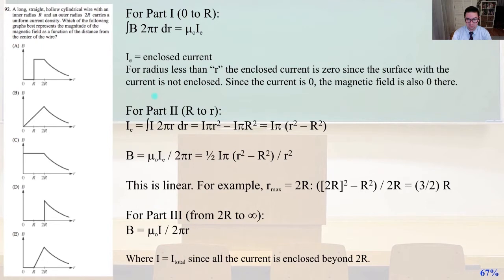For part two, which is R to lowercase r, I_E equals the integral of I, 2 pi R dr, and so we're going to do some algebra, and that equals I pi times little r squared minus big R squared, that quantity. And so B is going to equal, again, we're going to do some algebra, and so this quantity is linear. For example, R_max,